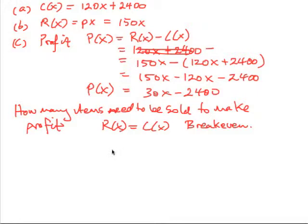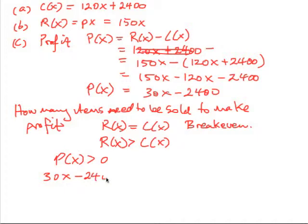And if we want to, of course, find when we make a profit, then we need to have the revenue being greater than the cost, or the profit being positive. So when is the profit going to be positive? Well, in this case here, we're going to have 30x minus $2,400 that we want to be greater than zero.